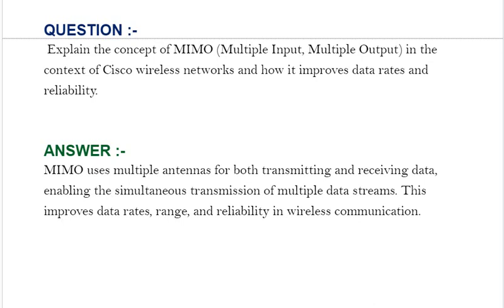Your answer should be: MIMO uses multiple antennas for both transmitting and receiving data, enabling the simultaneous transmission of multiple data streams. This improves data rates and reliability in wireless communication.